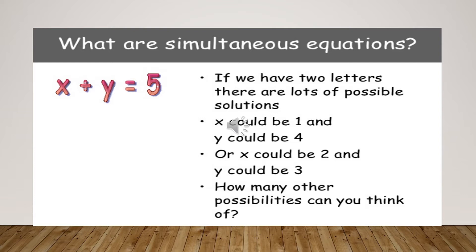Here we have another simultaneous equation. You can see that if we have two letters, there are a lot of possible solutions. It means that x could be 1 and y could be 4, or x could be 2 and y could be 3. It means there are different possibilities. And how many other possibilities can you think of? In my mind, it's like it can be 1 plus 4 equals to 5, or it can be 0 plus 5 equals to 5. It means different possibilities are there.